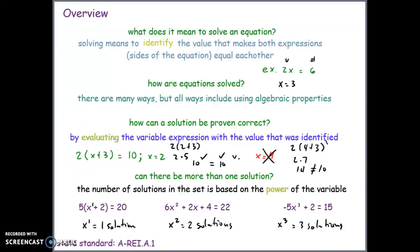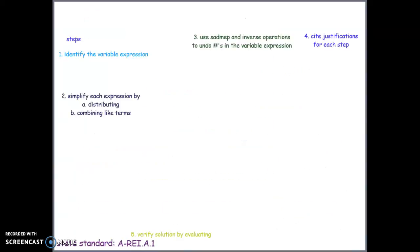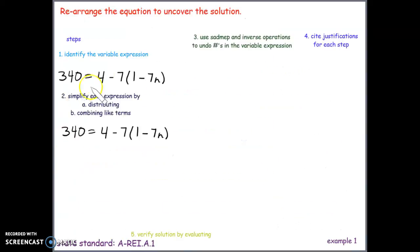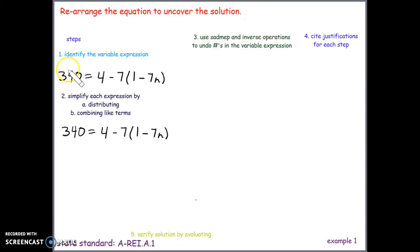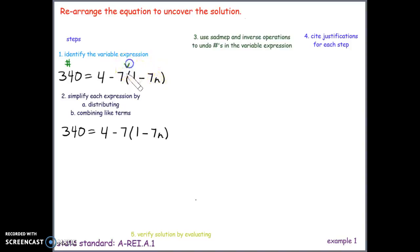Let's get into the first example. The directions say: rearrange the equation to uncover the solution. Our first step when solving is to identify the variable expression. We have 340, which has no variable — so that is the number expression. Then we have 4 minus 7 times quantity (1 minus 7n), which contains the variable — so that is the variable expression.